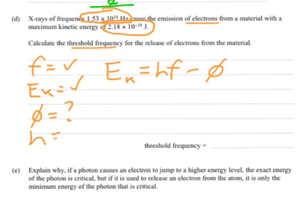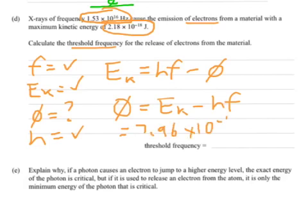So, we know h as well, because that's Planck's constant. So, we're pretty much just rearranging this equation, substituting our numbers in. phi equals kinetic energy minus hf. And then we're going to end up with the threshold energy of 7.96 times 10 to the minus 18 joules of energy.